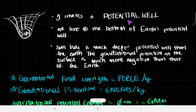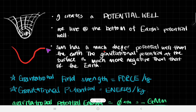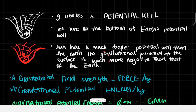The highest potential is maybe on the edge of the well. The lowest potential would be on the surface of whatever is causing this potential well. So gravity creates this potential well — we live at the bottom of the Earth's potential well. If I put the Earth's potential well instead of the sun, it'd probably be more shallow because the Earth is much smaller and has much less mass than the sun.